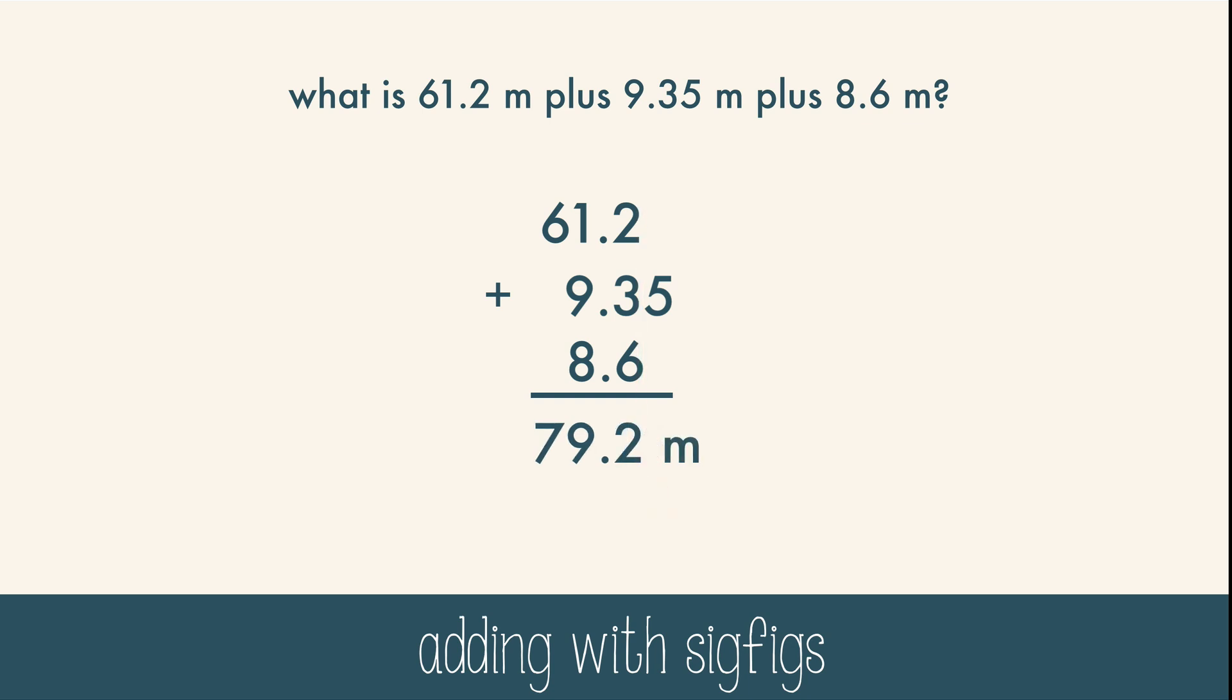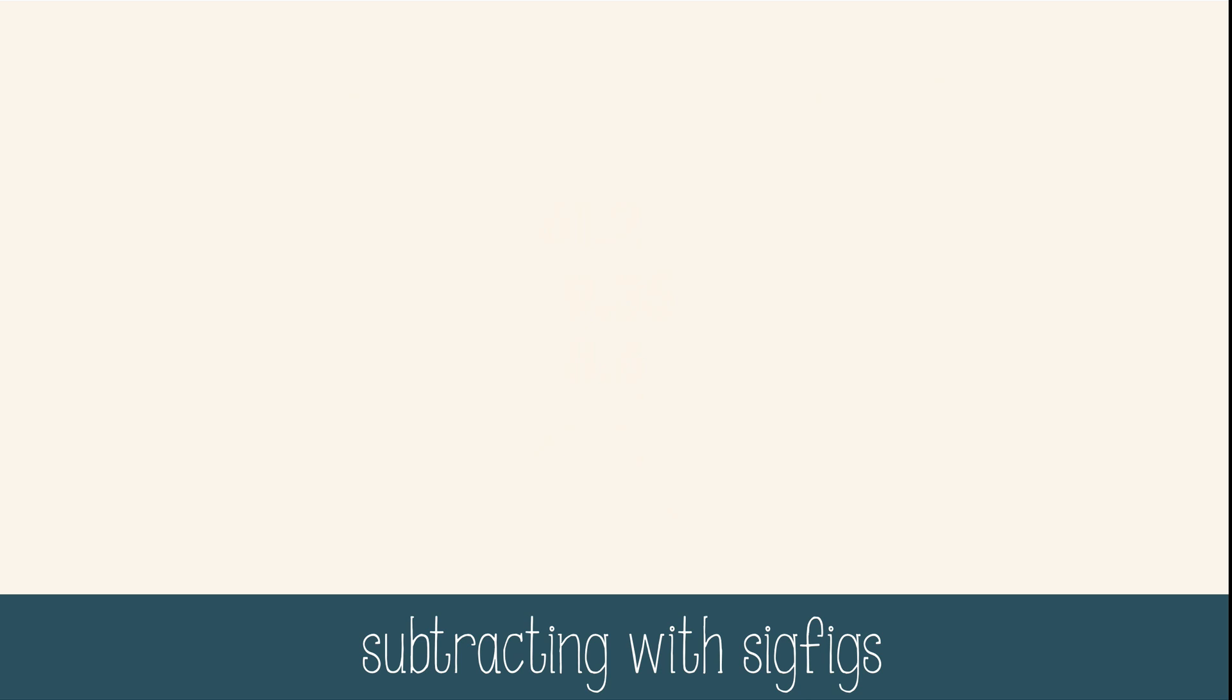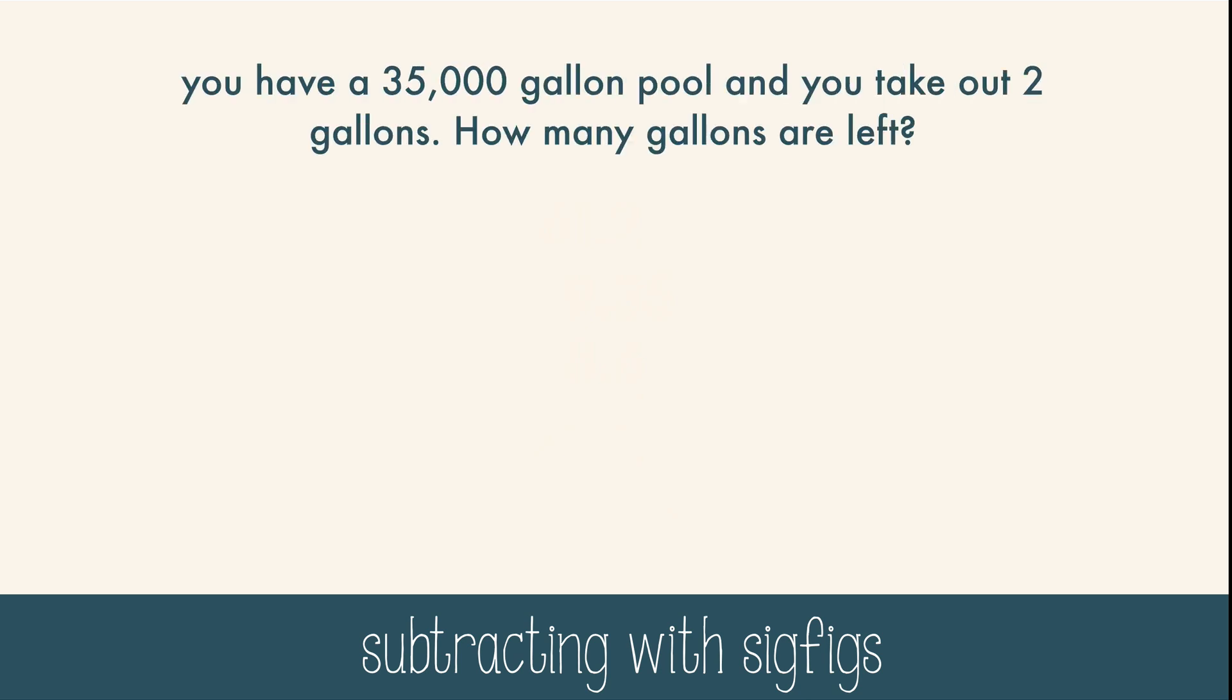Let's try another problem. You have a 35,000 gallon pool and you take out 2 gallons. How many gallons are left? This might seem obvious, but the answer may surprise you. Write out the problem, but line up the digits. Then do the math. Now when you look for the least specific digit, it's the thousands place. Those three zeros after the 5 are not significant. This is a very vague estimate, so we need to round to the nearest thousand. The 9 rounds up and the answer is 35,000 gallons. This might make you stop and say, 'Hey, but I know I took 2 gallons out.' Yes, that's true, but the first number is 35,000 plus or minus 500 gallons, and those measly 2 gallons aren't enough to change this large estimate.